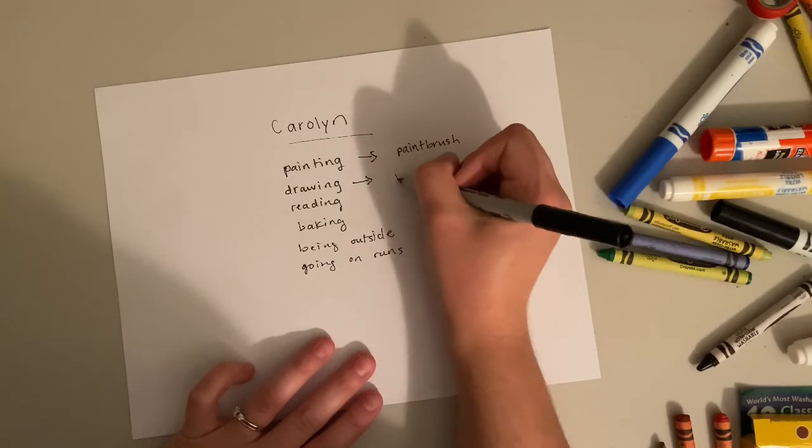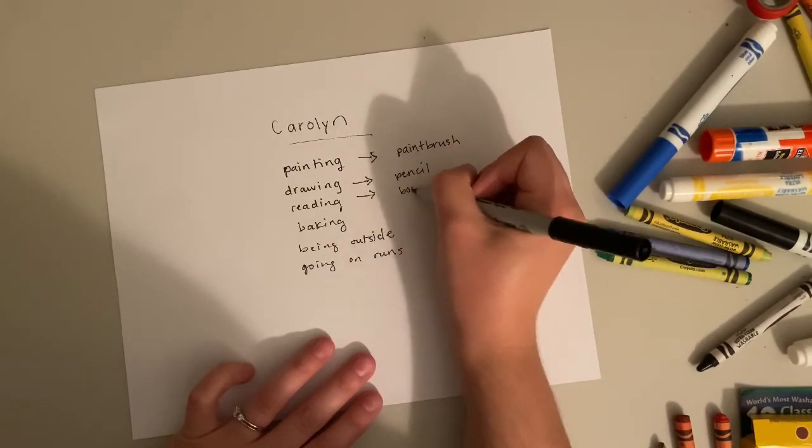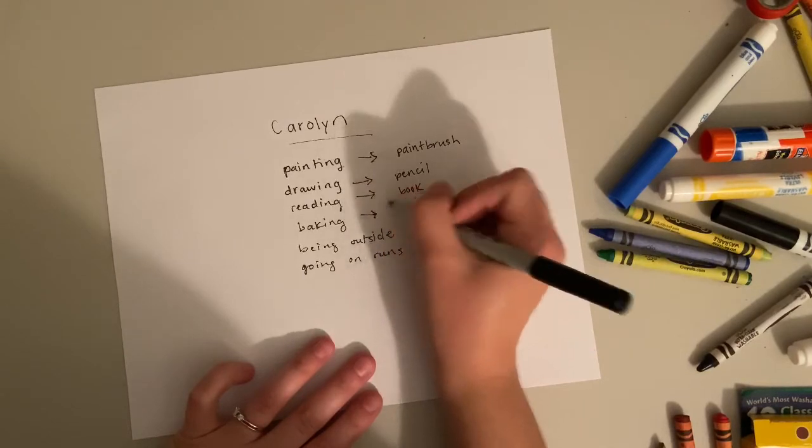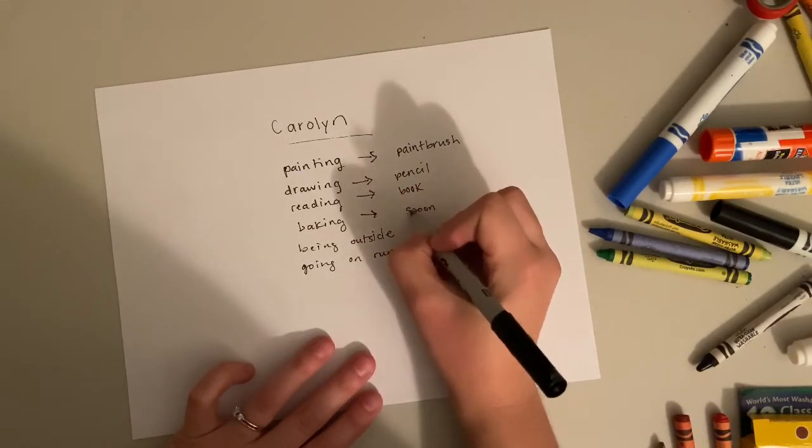So painting, I could draw a paintbrush. Drawing, I could draw a pencil. Reading, I could draw a book. Baking, I could draw a mixing bowl or maybe a spoon.